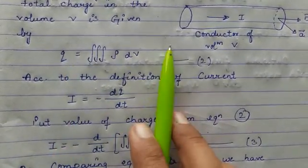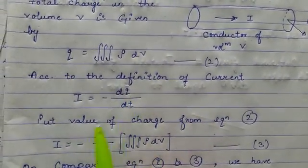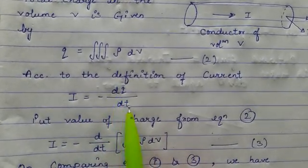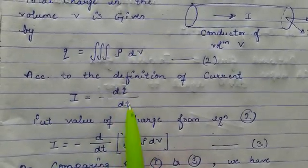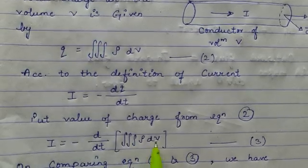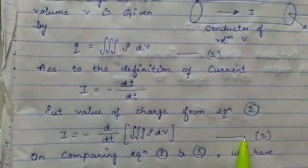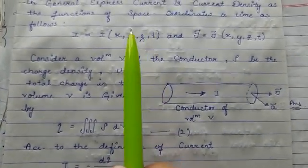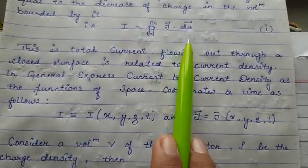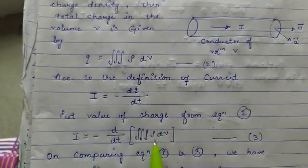Now I'm substituting the value of Q from equation 2 into this expression, so it will be: I is equal to negative d/dt of the triple integral of ρ dV. Write it as equation number 3.